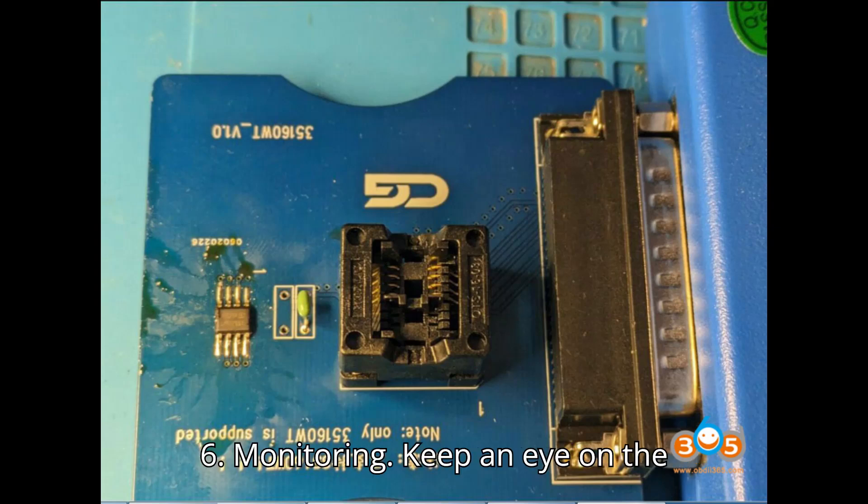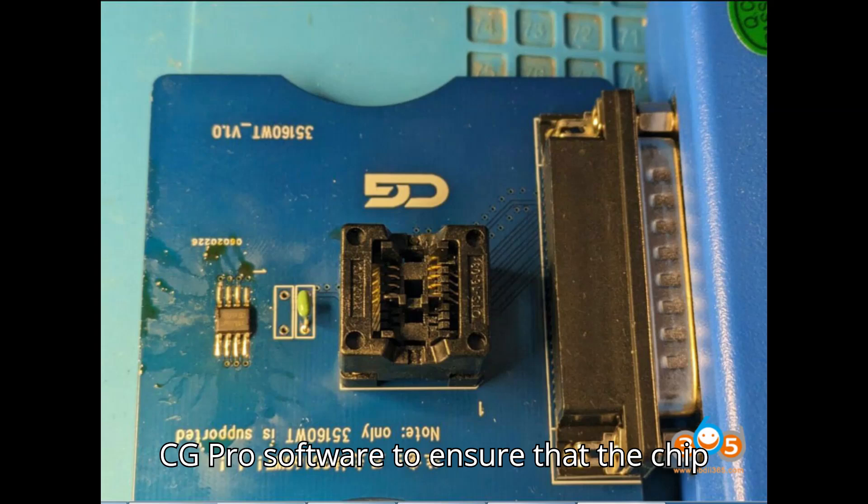Step 6: Monitoring. Keep an eye on the CG Pro software to ensure that the chip progresses through the erasing or writing process without getting stuck.